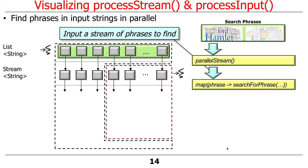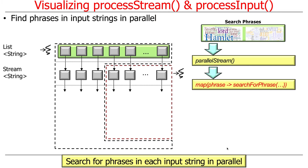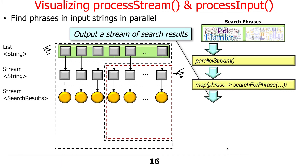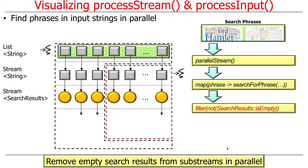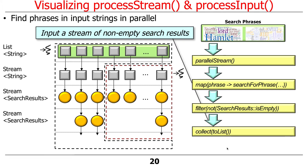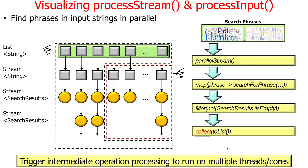The stream of phrases to find is piped into the map portion. Map will search for the phrases in each input string in parallel — those run in parallel, which is what's different from the sequential version. That outputs a stream of search results. We run that through a filter operation, which will look for the input phrases in the strings in parallel. That output is fed as input into collect, and collect triggers the intermediate operations — that's actually where the computations get done. The processing runs on multiple threads and multiple cores.